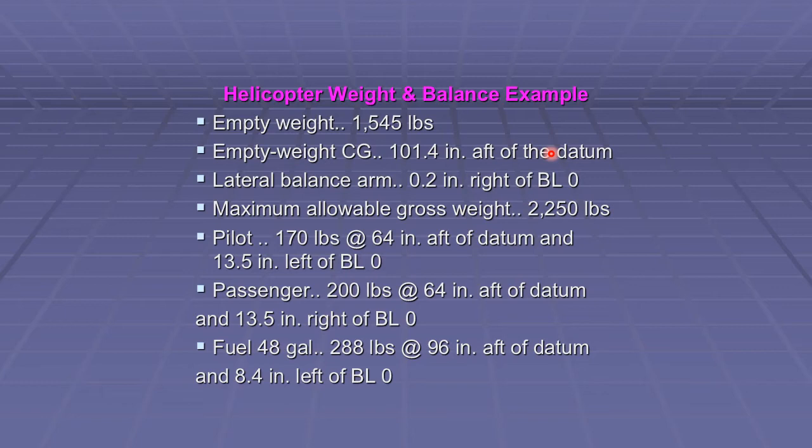Let's work through an example of a weight and balance calculation for a typical small helicopter. The empty weight of our helicopter is 1,545 pounds. The empty weight center of gravity is 101.4 inches after the datum and 0.2 inches right of buttline zero. The pilot weighs 170 pounds and is at 64 inches after the datum and 13.5 inches left of buttline zero. The passenger weighs 200 pounds and is at 64 inches after the datum and 13.5 inches right of buttline zero. Our fuel, 48 gallons or 288 pounds, is at 96 inches after the datum and 8.4 inches left of buttline zero.